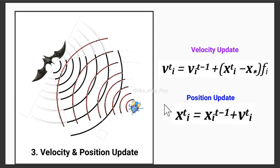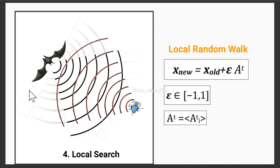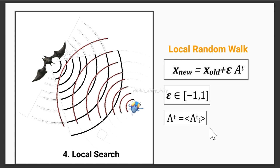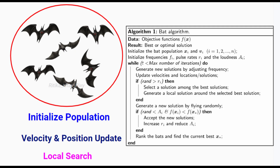Then we have velocity and position update. The algorithm updates each bat's position and velocity based on its current position, velocity, frequency, and a randomly chosen solution. The position update is guided by the best solution found so far. Then we have local search, which is used to refine the search. The algorithm introduces a local search mechanism where bats make small adjustments to their position based on random factors and the average loudness of all bats.